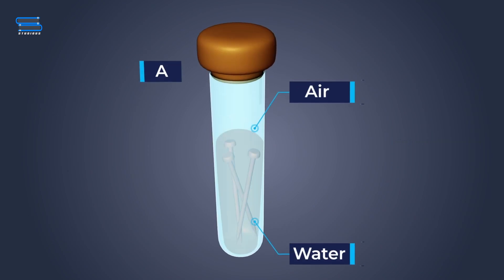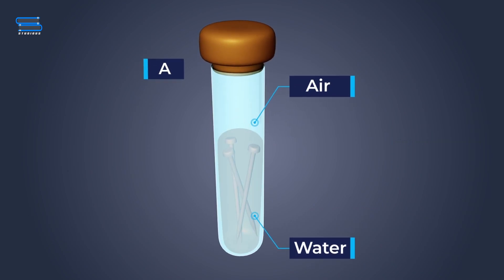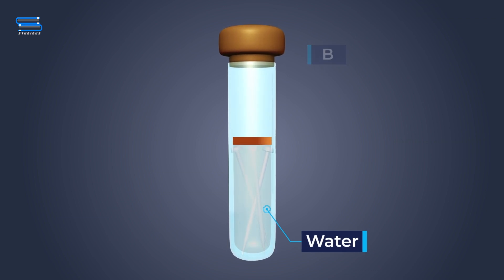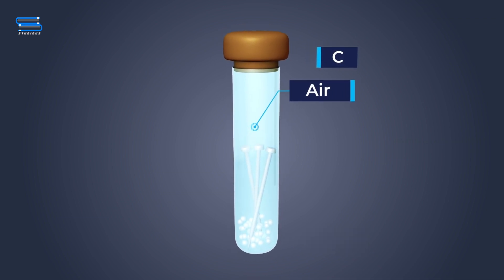Note that the nails in test tube A are exposed to both air and water, the nails in test tube B are exposed only to water, and the nails in test tube C are exposed to dry air.